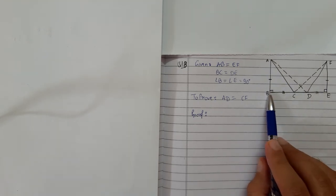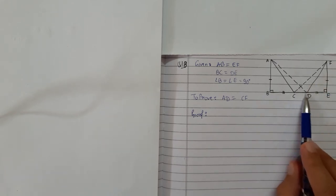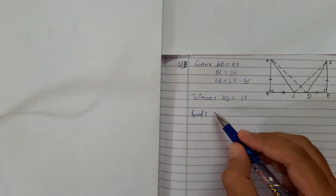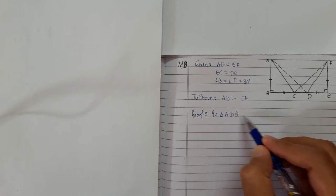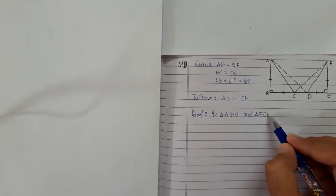So ADB is a good option. Hope you could figure it out. FCE is another good option. In triangle ADB and triangle FCE, some things are very easily given.